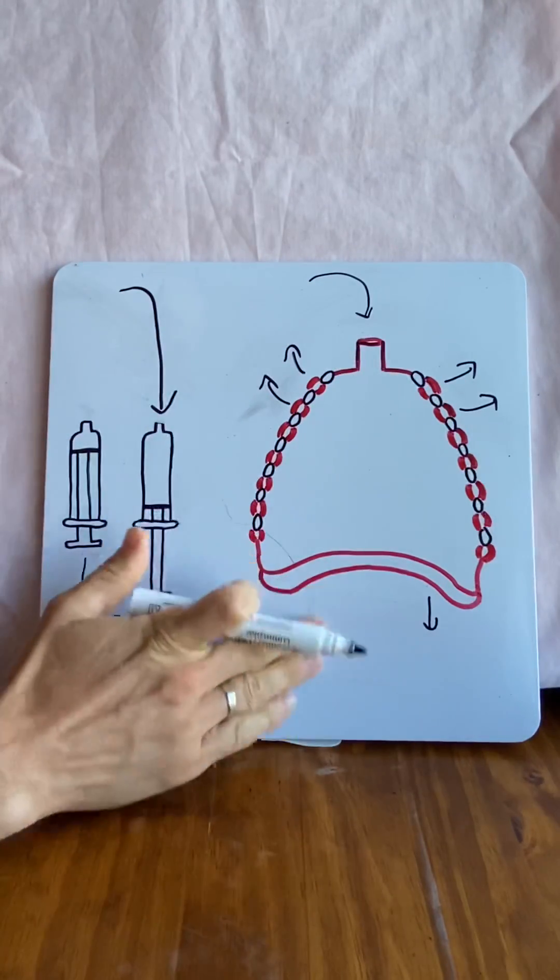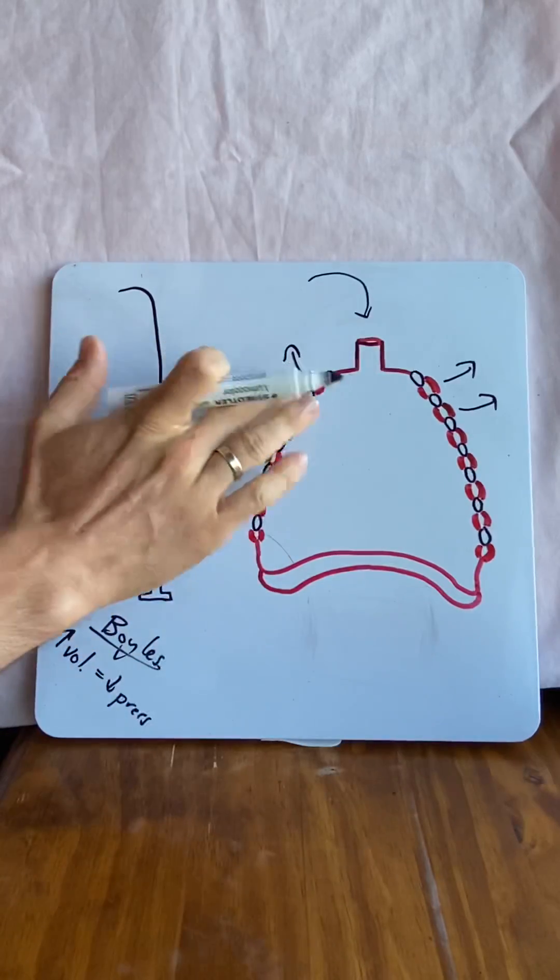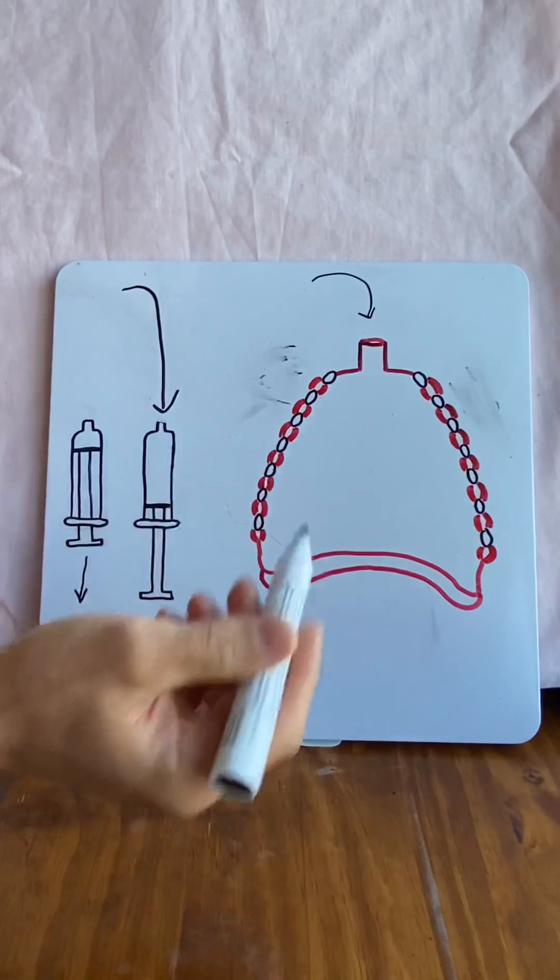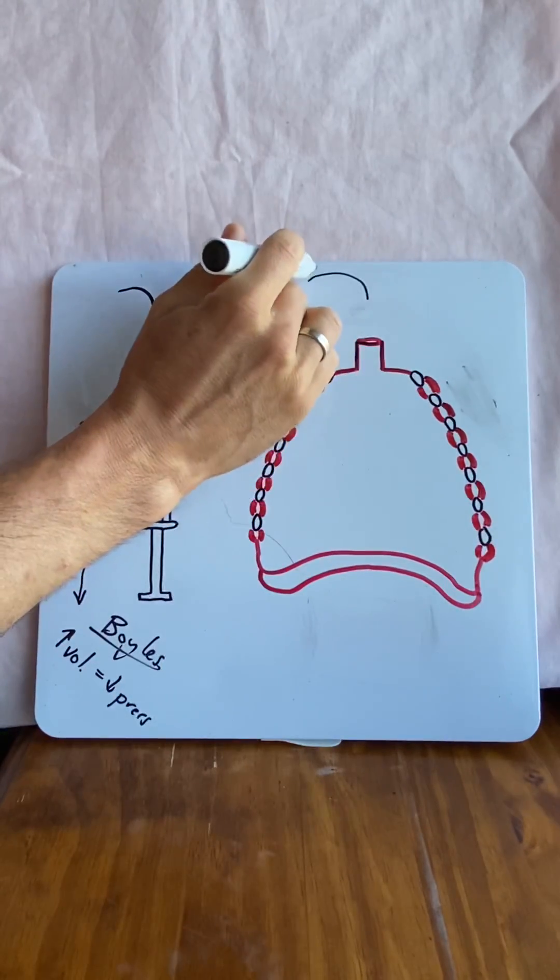What if we want to breathe out? What do we do? Well, we simply relax those muscles. That's the first thing we do. And air will move out because we're decreasing the volume, increasing the pressure and air moves out.